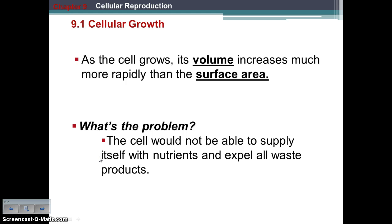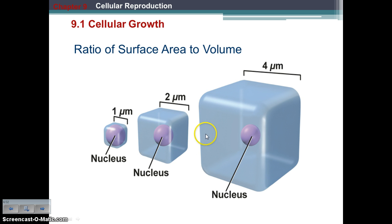So why do we need to do this? As cells grow, their volume increases much faster than the surface area. The problem is if the volume — the inside — is getting too big for the outside, then the cell membrane can't supply the inside with enough nutrients and can't let out enough waste. As the cell gets larger, its volume increases at a very fast rate, whereas its surface area really isn't increasing all that quickly.